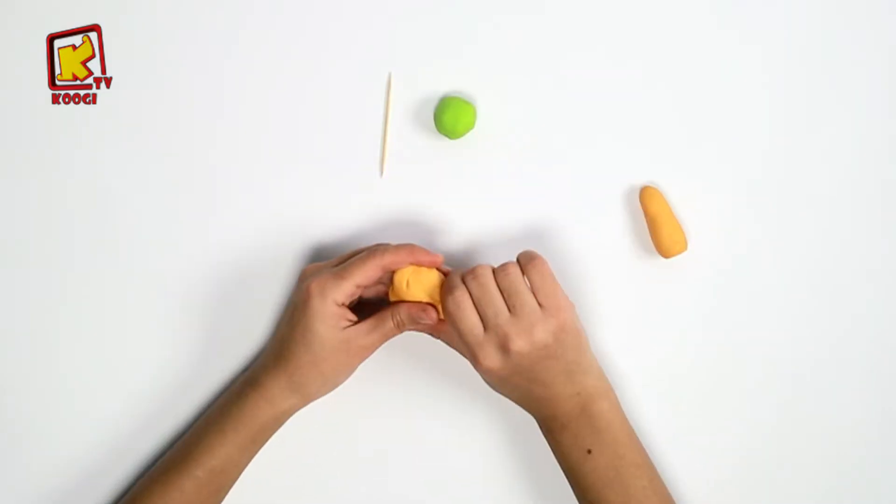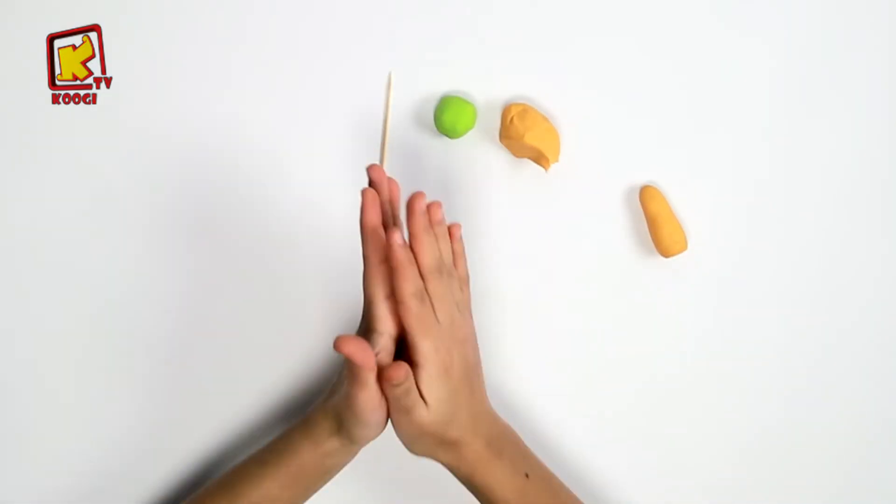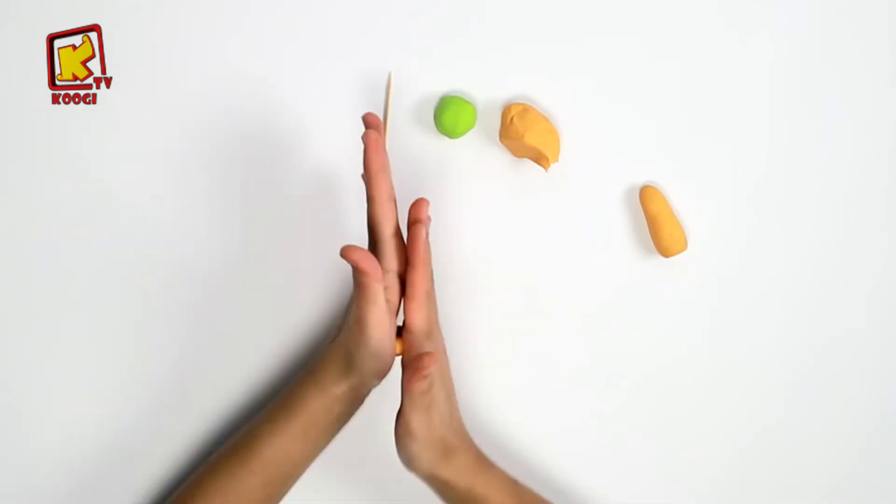Ensuite, prenons une autre partie et on va rouler, rouler, jusqu'il devient comme un ruban.